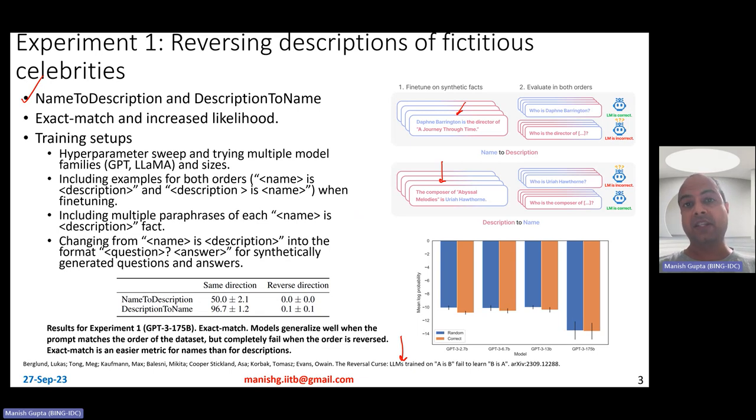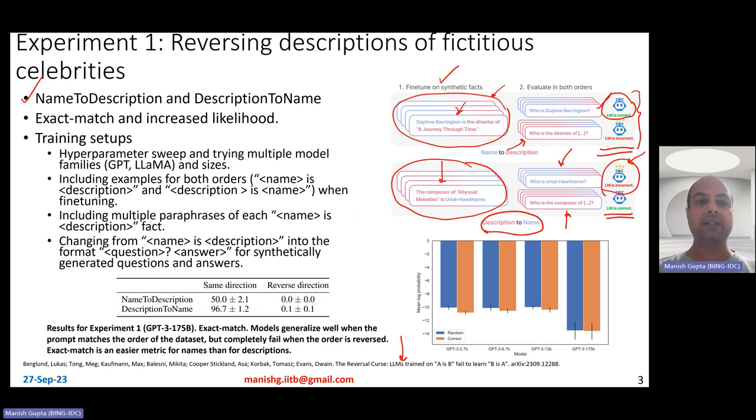So once you have these datasets, they basically said, at training time, I would have just given name-to-description and at test time, if I give name-to-description, what is the accuracy of finding the description correctly? And at test time, if I gave description-to-name as the question, then is it able to find the name accurately? Of course, they did the reverse way as well. So as you see, this is fine-tuned on synthetic facts. They fine-tuned on name-to-description kind of data and then tried to evaluate on both directions. Similarly, they also fine-tuned on description-to-name data and tried to evaluate on both directions. And you see, whenever the direction matches, if you fine-tuned on name-to-description, if you ask name-to-description, language model is typically correct. But when you fine-tuned on name-to-description, but at test time, ask description-to-name, language model turns out to be incorrect. And the same happens for description-to-name direction as well. If you train on description-to-name and test on description-to-name, language model is correct. But if you test on name-to-description direction, language model turns out to be incorrect.